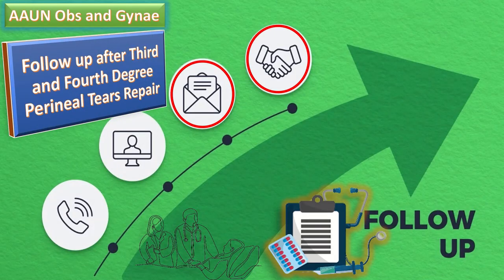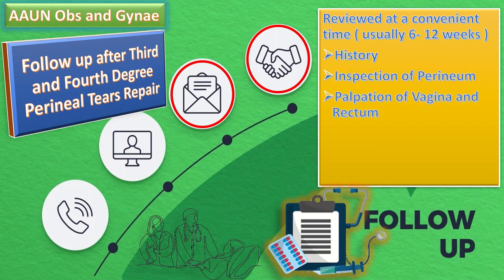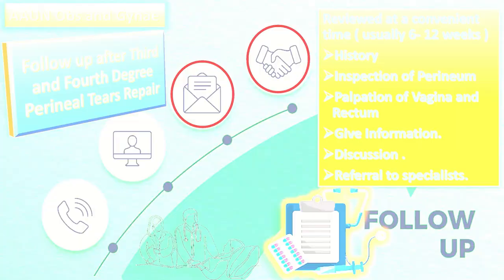For follow-up: women who have undergone obstetric anal sphincter repair should be reviewed at six to twelve weeks post-delivery. At follow-up, history of symptoms of incontinence is taken, inspection and palpation of the perineum and vagina are done, and information about possible late-onset worsening of anal incontinence symptoms is discussed. Subsequent pregnancies are also discussed, and if the woman experiences incontinence or pain at follow-up, referral to a specialist gynecologist or colorectal surgeon should be considered.